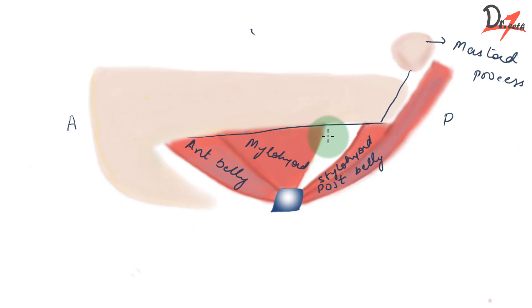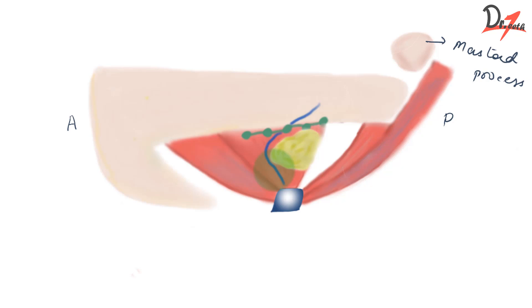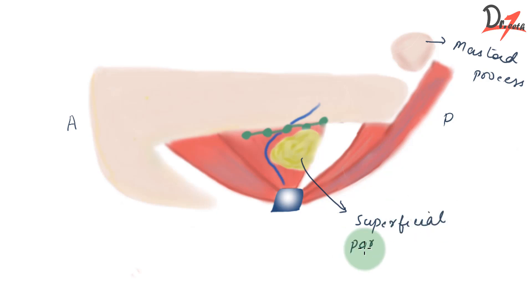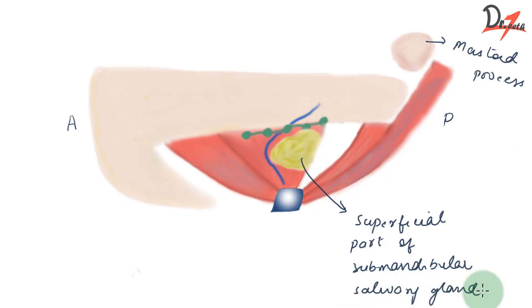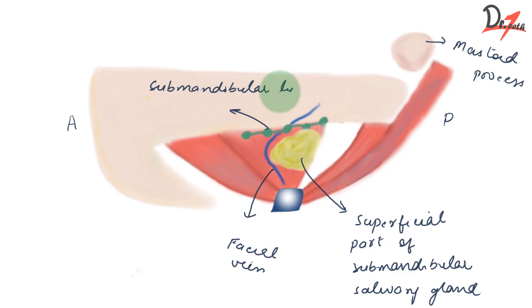Coming to the contents of the anterior part of the triangle — superficial to the mylohyoid muscle, we have the superficial part of the submandibular salivary gland, we have the facial vein, and we have the submandibular lymph nodes.